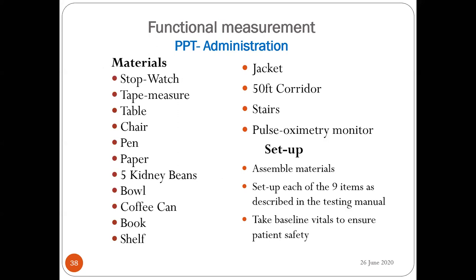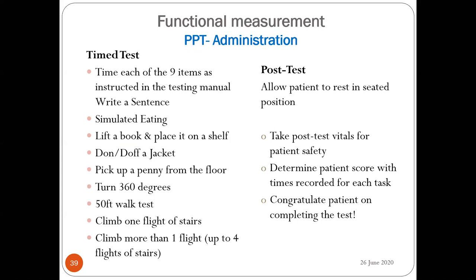Materials required: stopwatch, tape measure, table, chair, pen, paper, dried kidney beans, bowl, coffee can, book, shelf, jacket, 50-foot corridor, stairs, and pulse oximeter. Setup: assemble materials and set up each of the nine items as described in the testing manual. Take baseline vitals to ensure patient safety. Each of the nine items is timed according to the testing manual. For example, ask the patient to write a sentence and record the time taken.